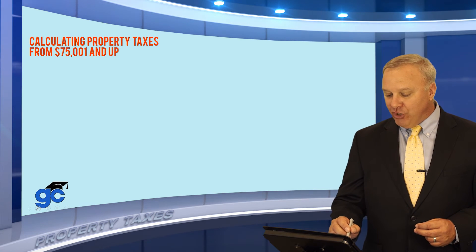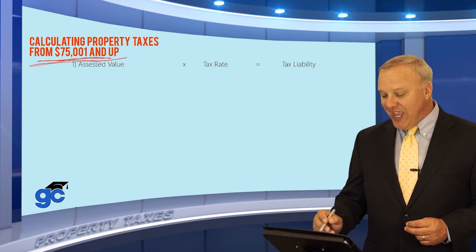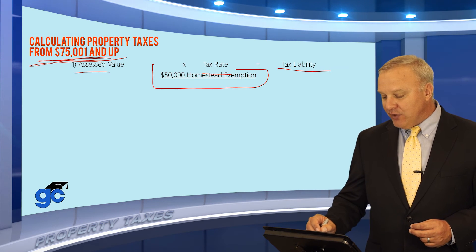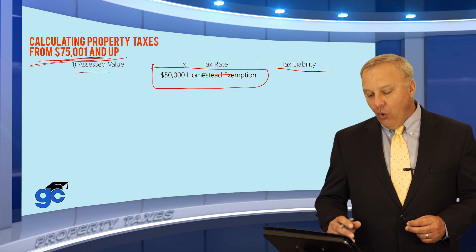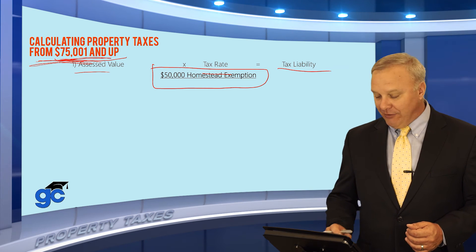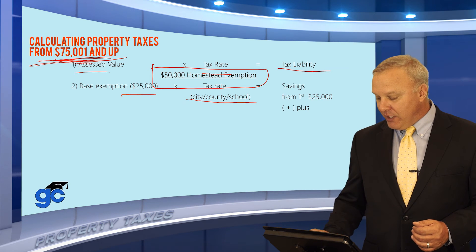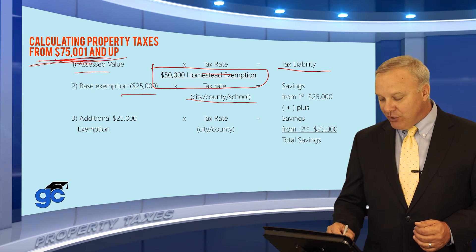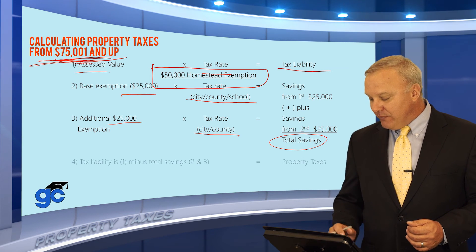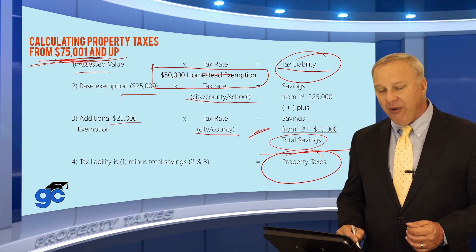The third example is when the property value is $75,000 and up. Assessed value times tax rate equals your tax liability. Now you have a $50,000 homestead exemption regardless of what your property value is, because the property value in the question is over $75,001. Your base exemption is $25,000 for city, county, and school board, plus your second exemption of $25,000 times the city and the county only. Add those two together for your total savings, subtract that from your tax liability, and that will give you your property taxes due.